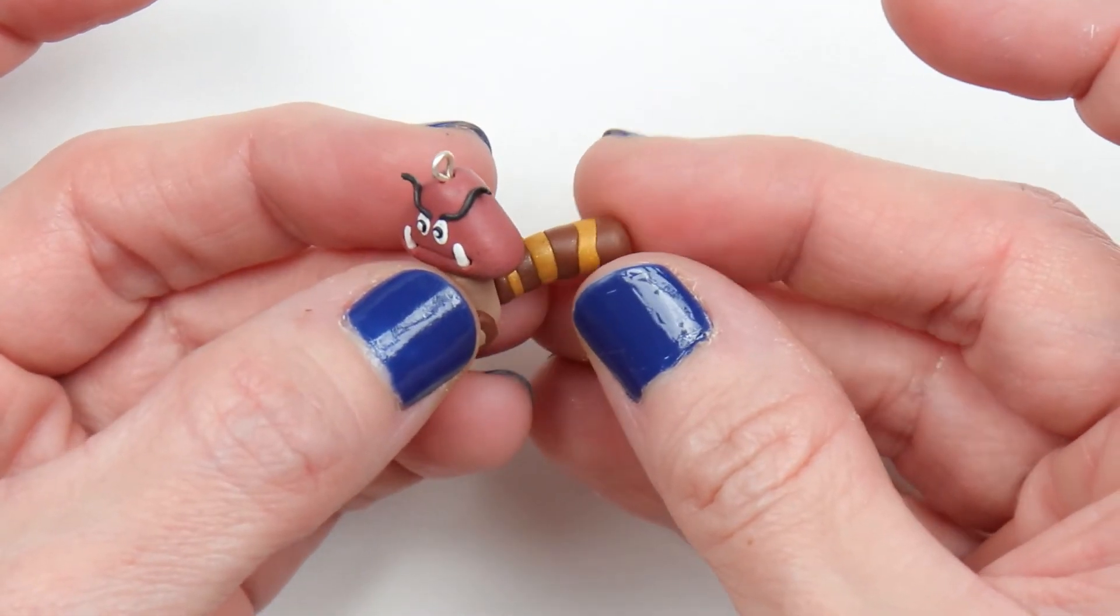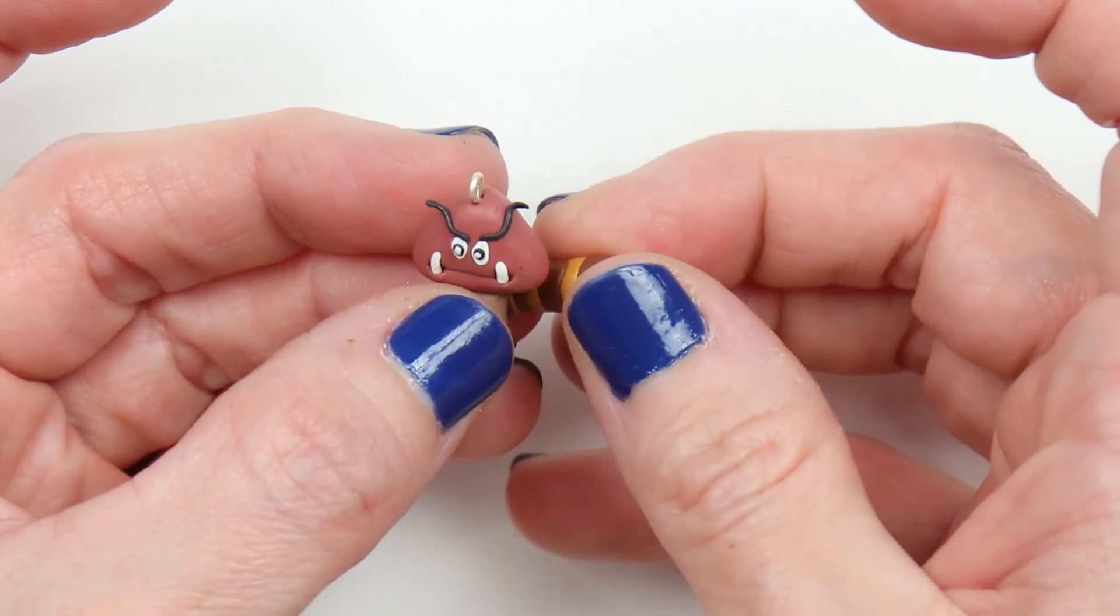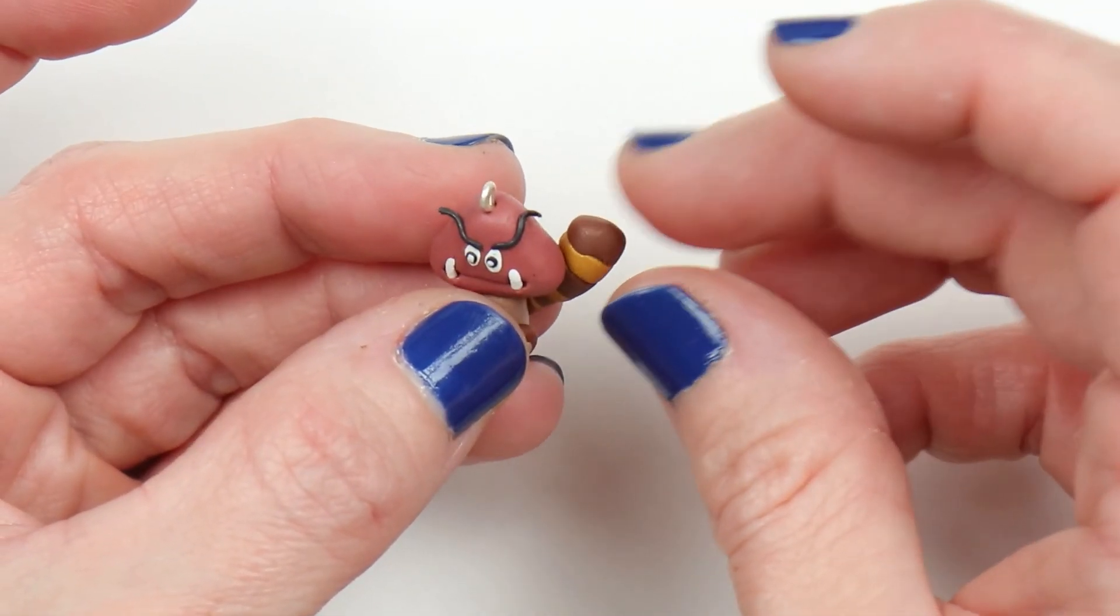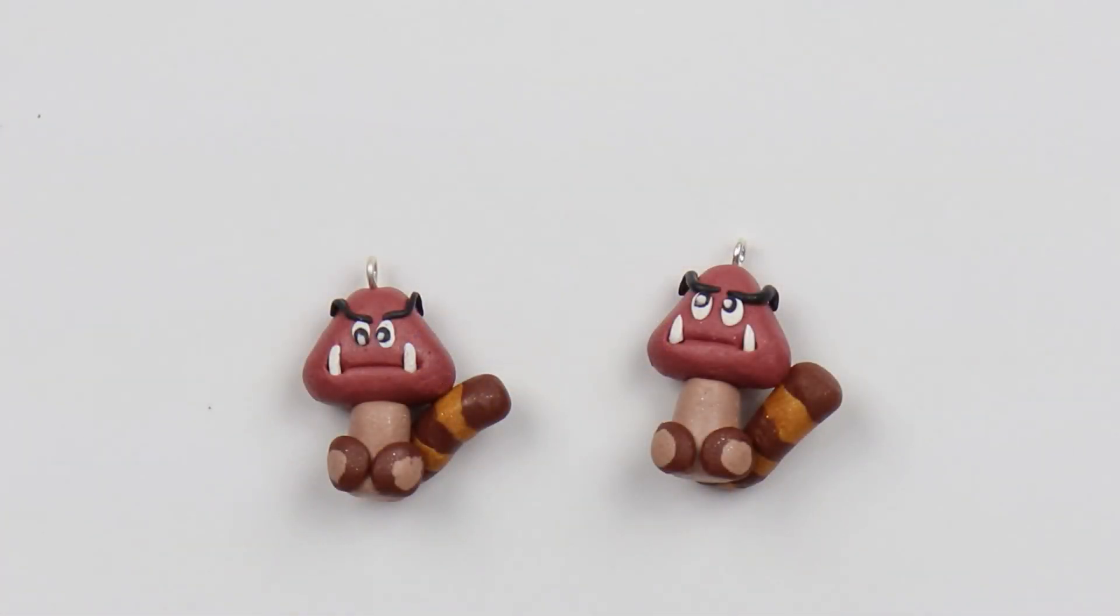Attach this to the back base of the goomba body. And then bend it, and shape it, however you want. And I've made a second one, for my pair of earrings. And I'll bake my pieces.